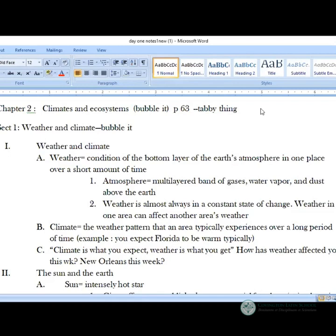The next definition, which you unindent, we're going backwards a little bit, is climate. Climate is the weather pattern that is typically, I'm going to highlight that word, typically, experienced over a long period of time. For example, you expect Florida to be warm, typically. So if I ask you what the weather is, I'm talking about what's happening today outside. If I ask you what the climate's like, that's what overall it's like. So my favorite quote is this quote under C: climate is what you expect, but weather is what you get.